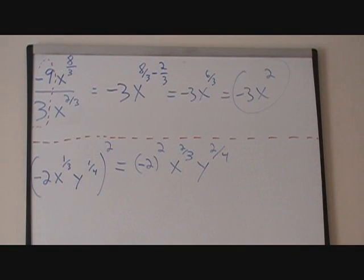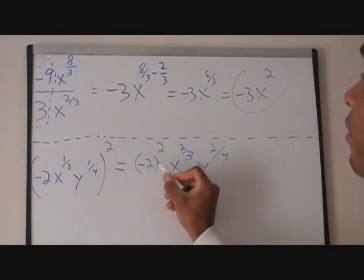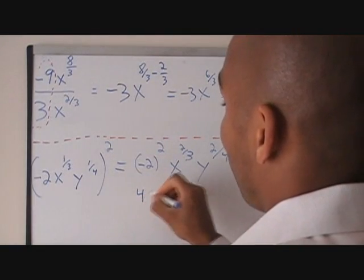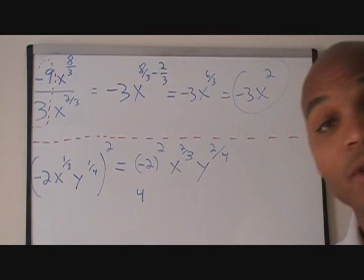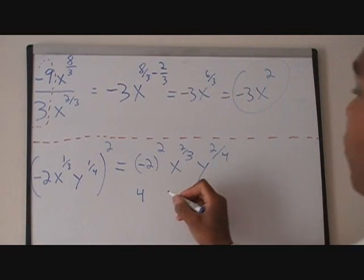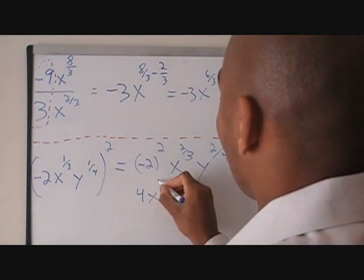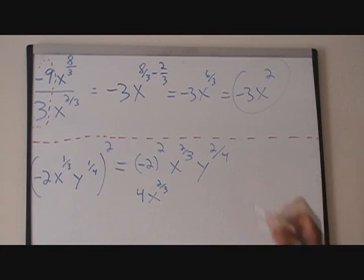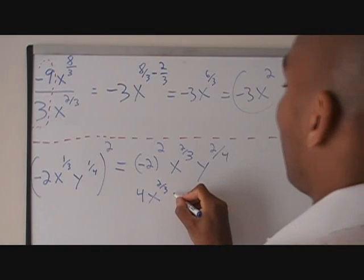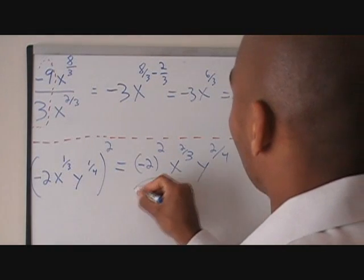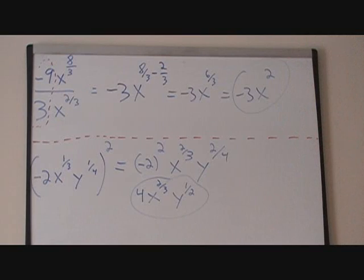Now, we can clean this up a little bit. Negative 2 squared is positive 4, because we have negative 2 times negative 2. x to the 2 thirds — there's nothing we're going to do with that, it's just going to stay x to the 2 thirds. And the last piece, y to the 2 fourths, is going to be reduced to y to the 1 half. And there's our final answer.